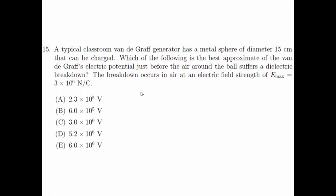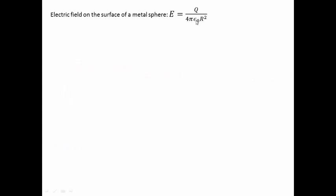To start answering this question, we look at the formula of the electric field on the surface of the metal sphere as shown here. E is equal to Q over 4πε₀R². E is the electric field, Q is the charge on the surface of the metal sphere.